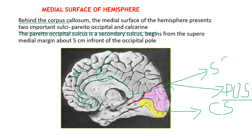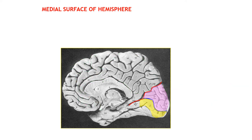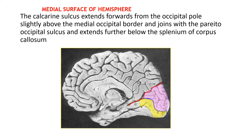The parieto-occipital sulcus, which we learned in the previous video, is a secondary sulcus beginning from the supramedial margin, exactly 5 cm in front of the occipital pole. The calcarine sulcus cuts the occipital pole slightly above the medial occipital border, and it joins with the parieto-occipital sulcus below the splenium of the corpus callosum — the posterior end of the corpus callosum. You can see both sulci joining below the splenium.